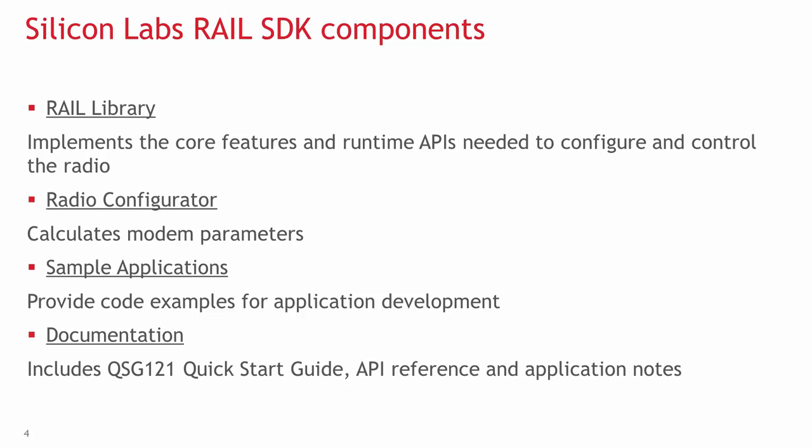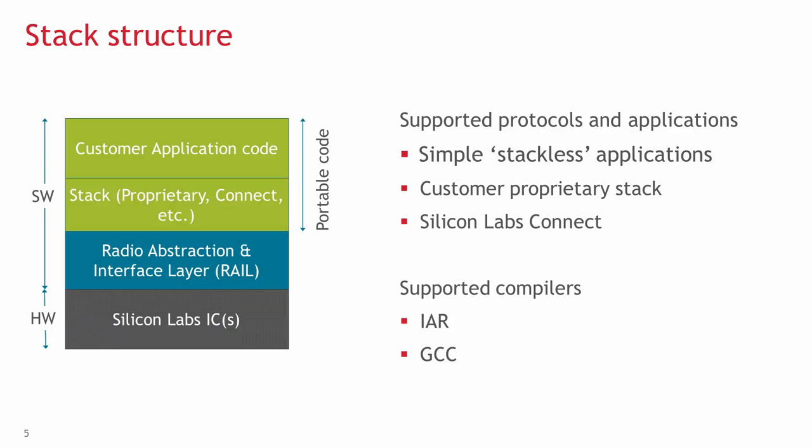The RAIL API is documented in the online API reference as well as in other documents installed with the stack or available through Simplicity Studio. RAIL provides an interface to the radio and supports low-level radio configuration, making it easy for developers to implement MAC layer or network layer functionality using their own stack or one of Silicon Labs' networking stacks.